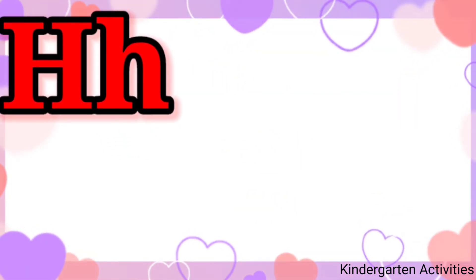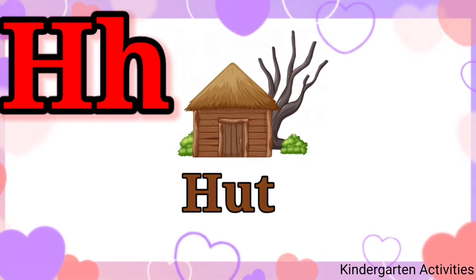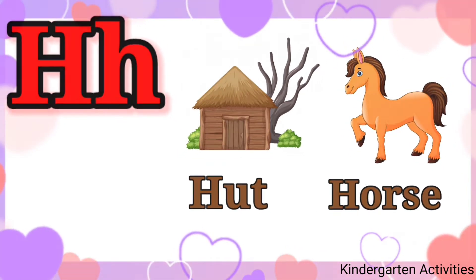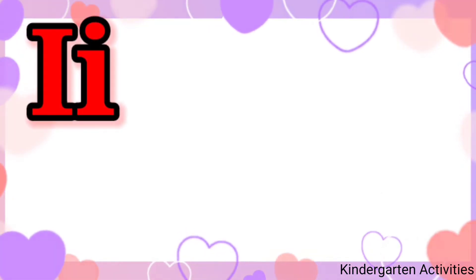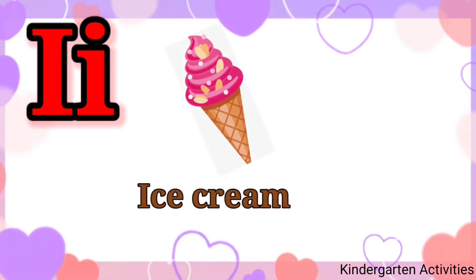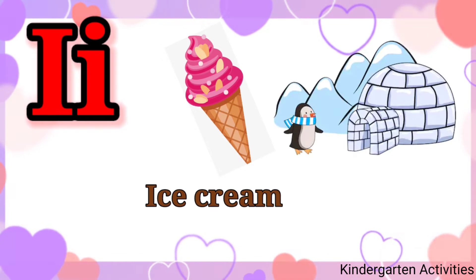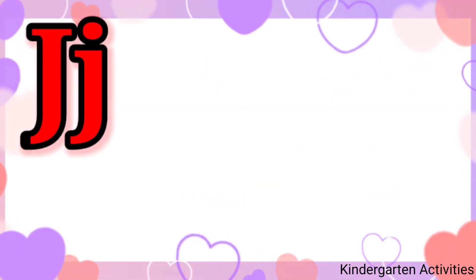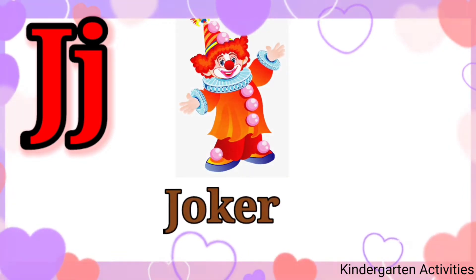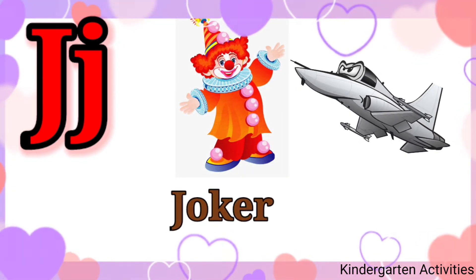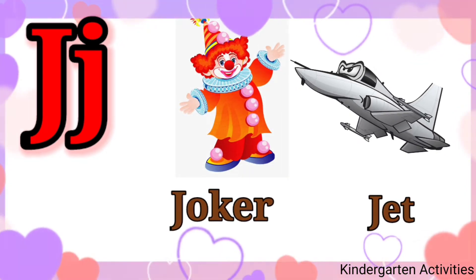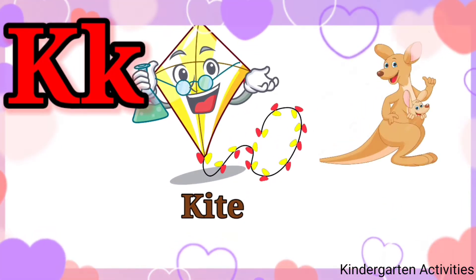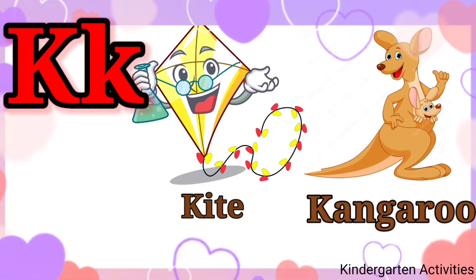H for hut, H for horse. I for ice cream, I for igloo. J for joker, J for jet. K for kite, K for kangaroo.